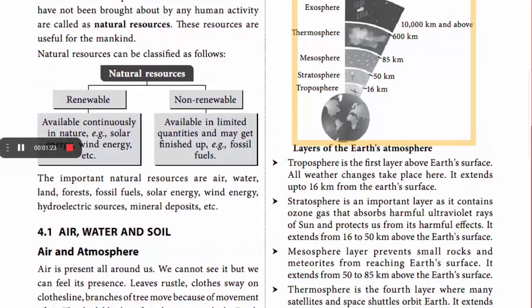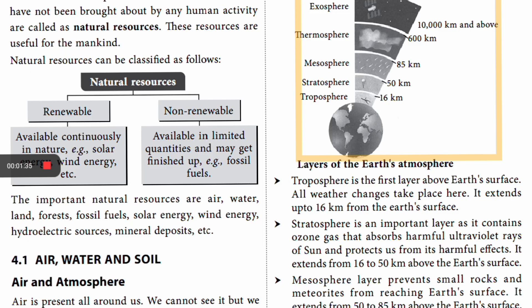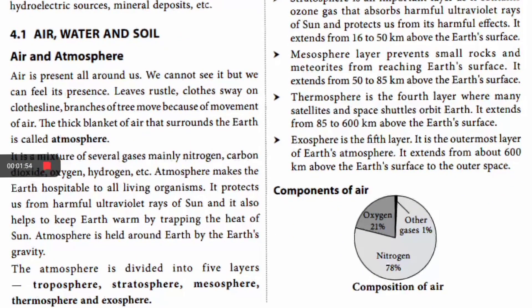So, resources present in the environment and not created by human activities are called natural resources. There are two types: renewable, which are present continuously and won't ever get finished, and non-renewable, which will get finished after some use. Now we will go to section 4.1: air, water, soil, and the atmosphere.